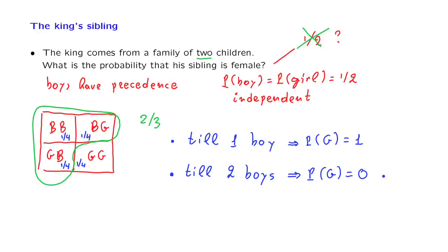So, two thirds is the official answer as long as we make the precise assumptions that the number of children, the number 2, was predetermined before anything else happened.